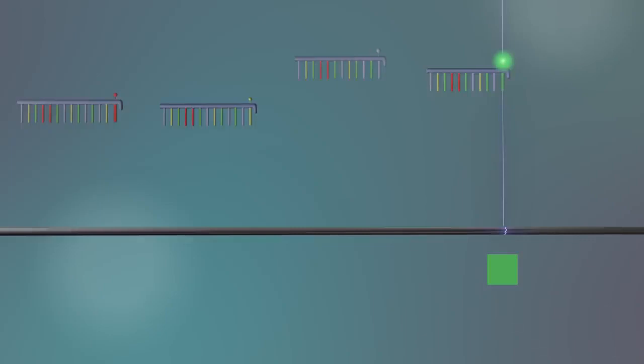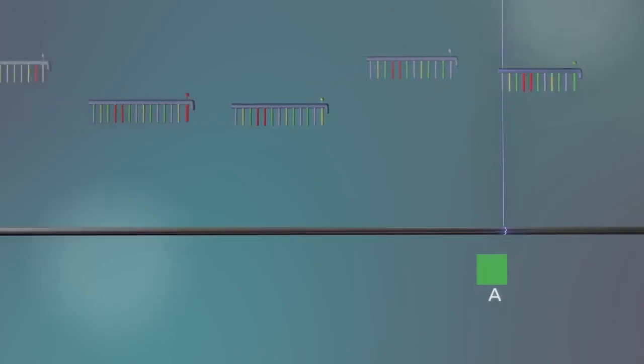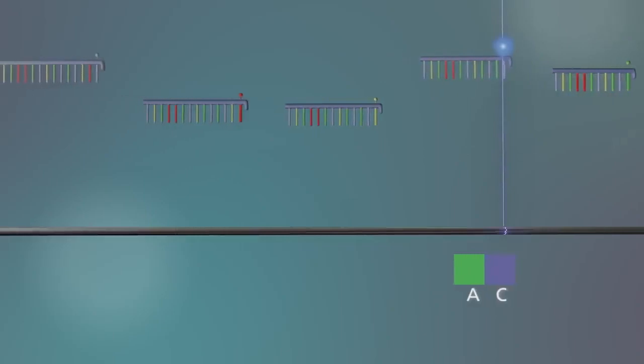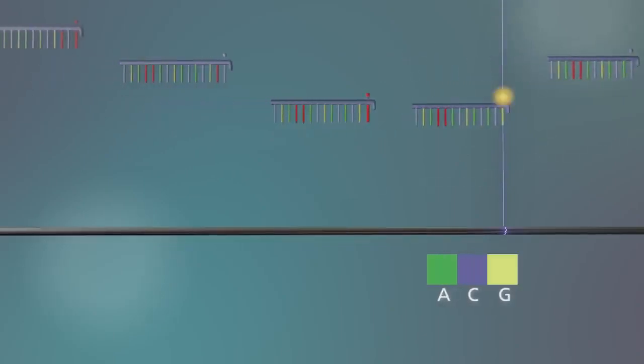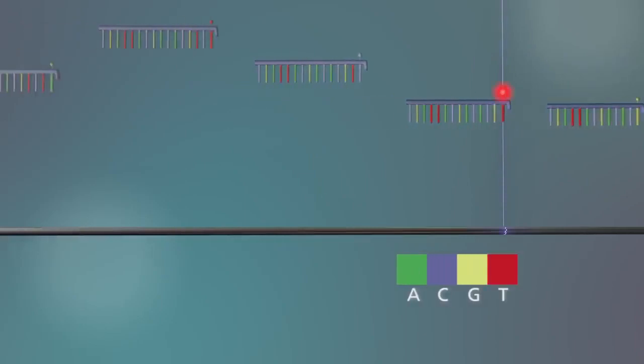Each terminator base is labelled with a different colour. A fluoresces green, C blue, G yellow and T red.